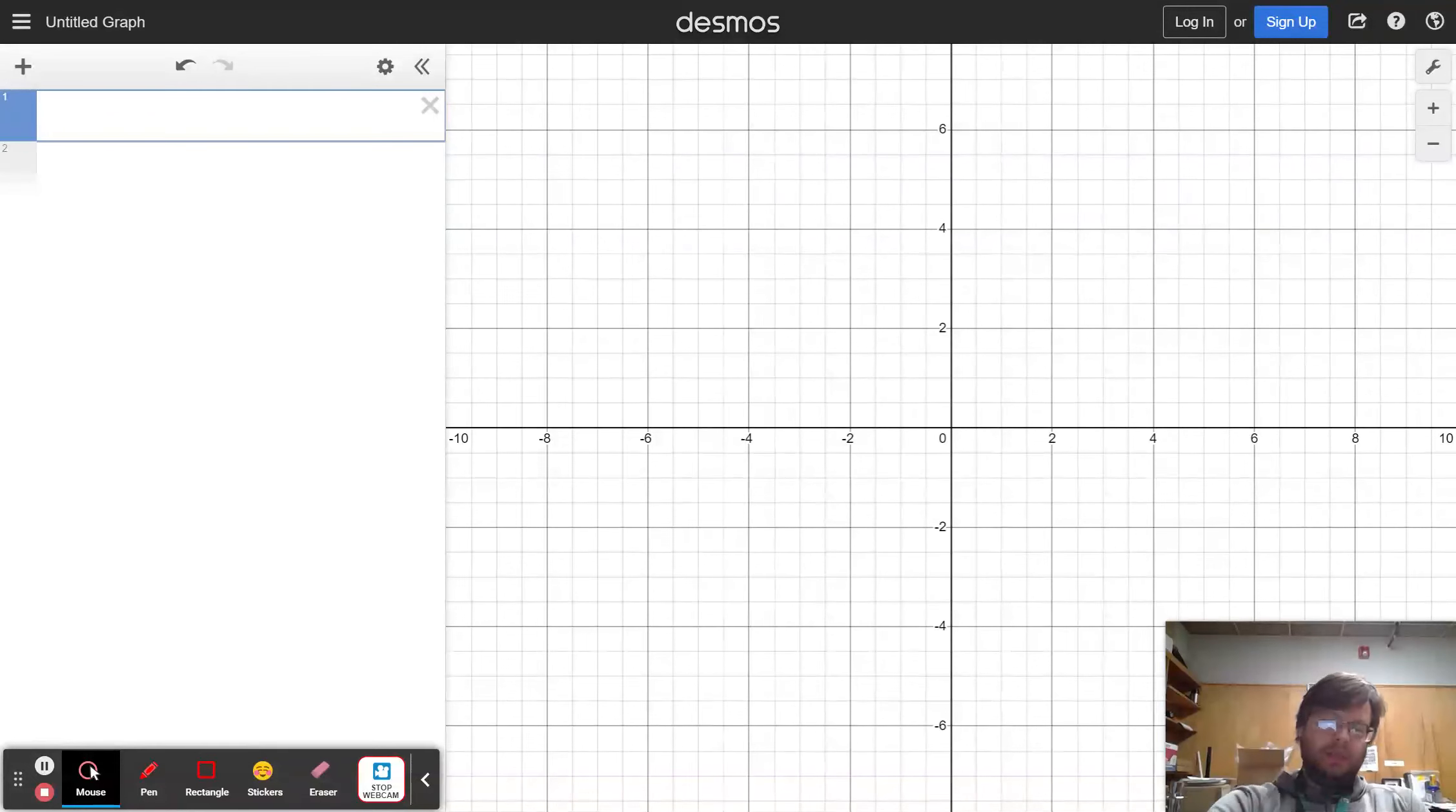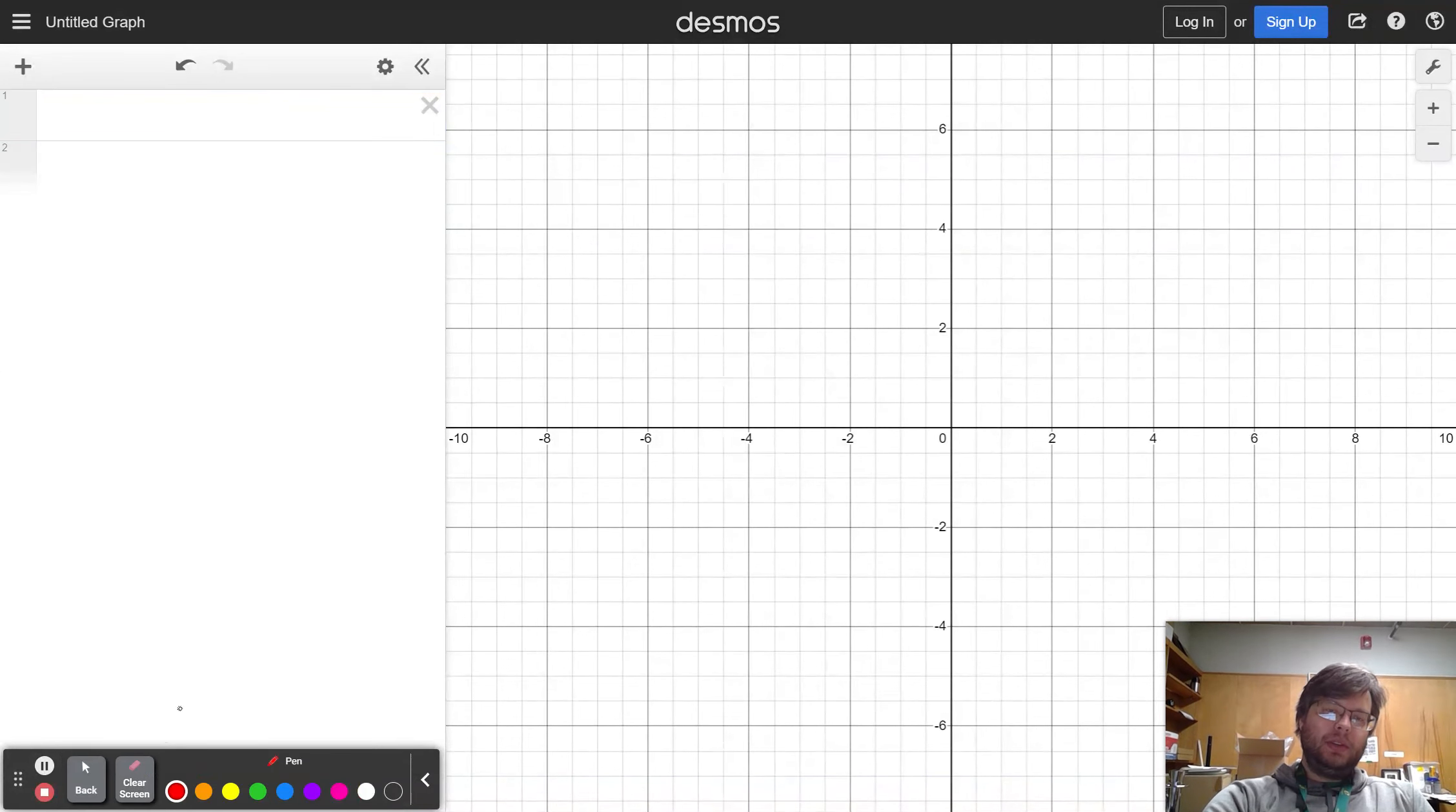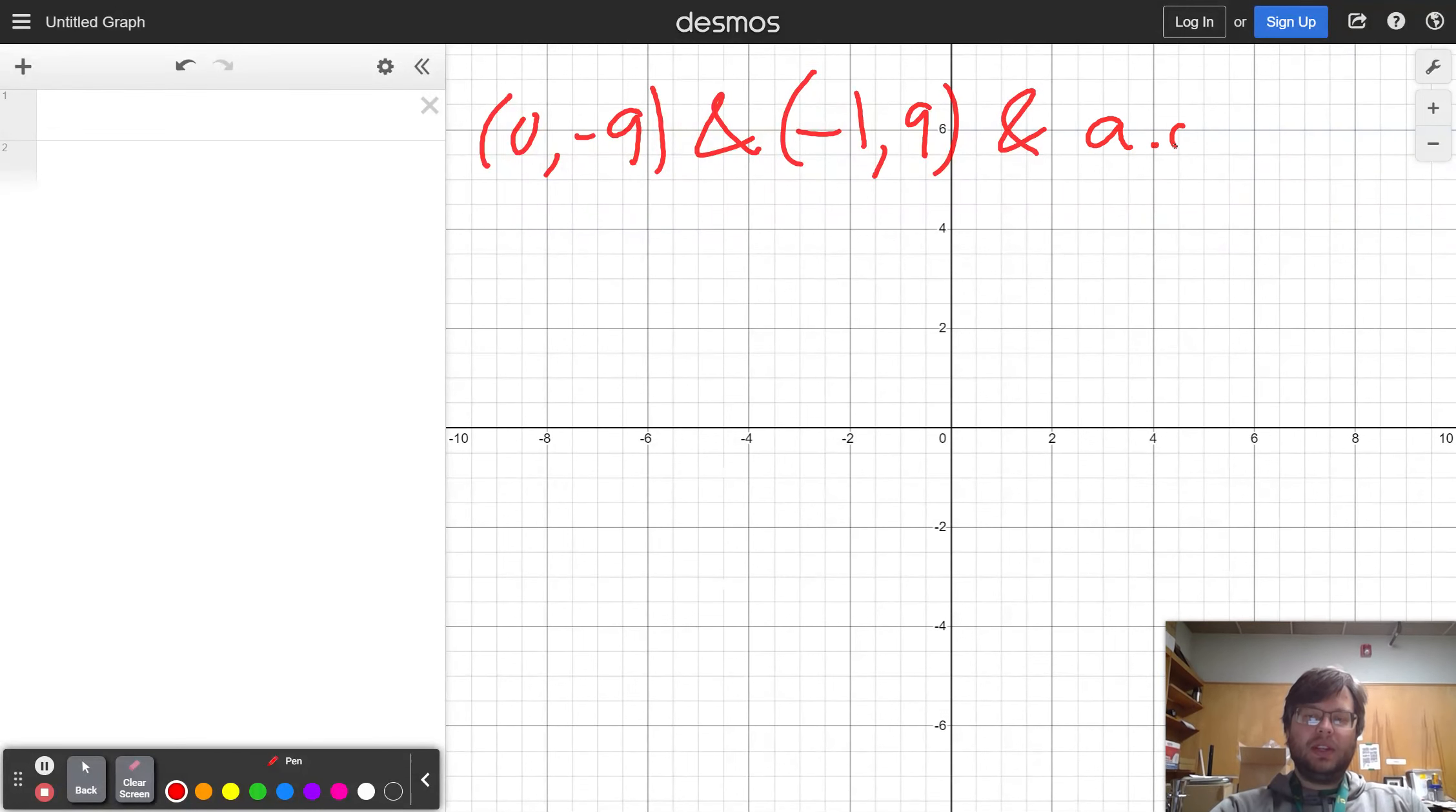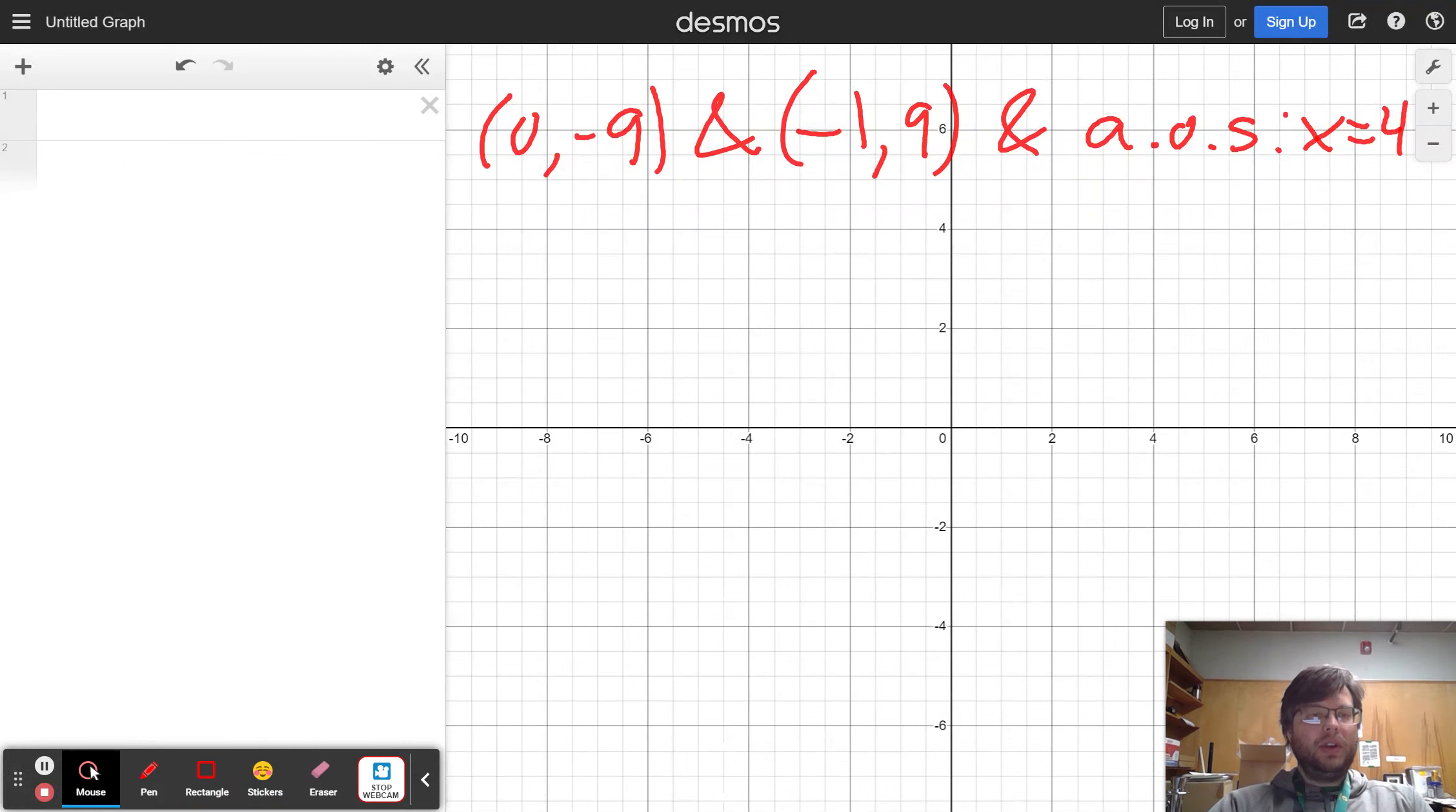So you were given in the problem a couple pieces of information. You were given, I believe it was 0, negative 9, although it doesn't really matter what the point is, and negative 1, positive 9, and that the axis of symmetry was x is equal to positive 4. So if I type that information in, or if you try to graph it, you can see a few things.